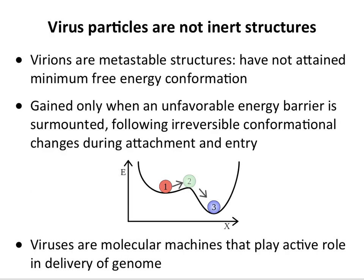One thing you should understand at the start is that a virion — that infectious particle — is not just an inert particle. It's not like a latex bead that gets passively taken into cells. These are little machines. We say that they are metastable; that is, they haven't reached a minimum free energy confirmation. And this is a graph of different energy states that a virus can be present at — energy on the y-axis, and x is a random variable, perhaps time.